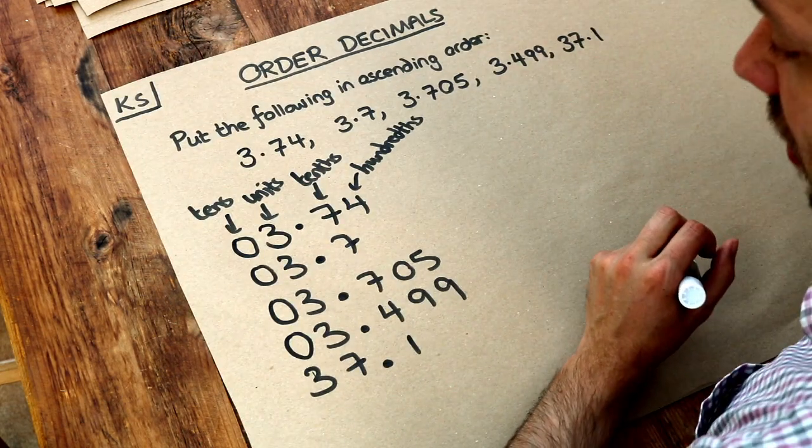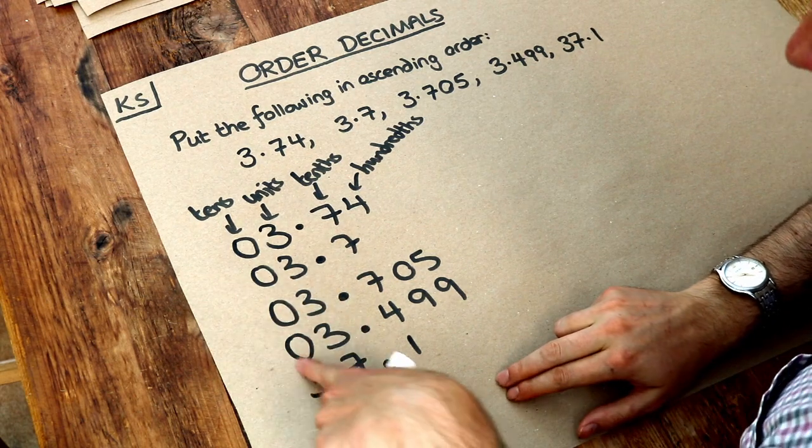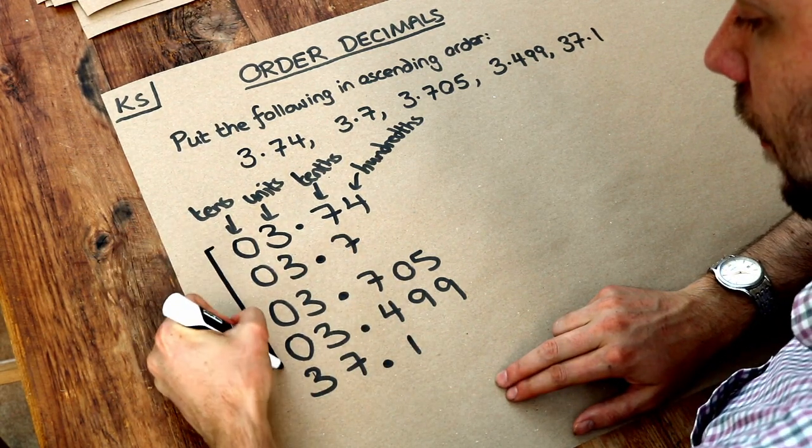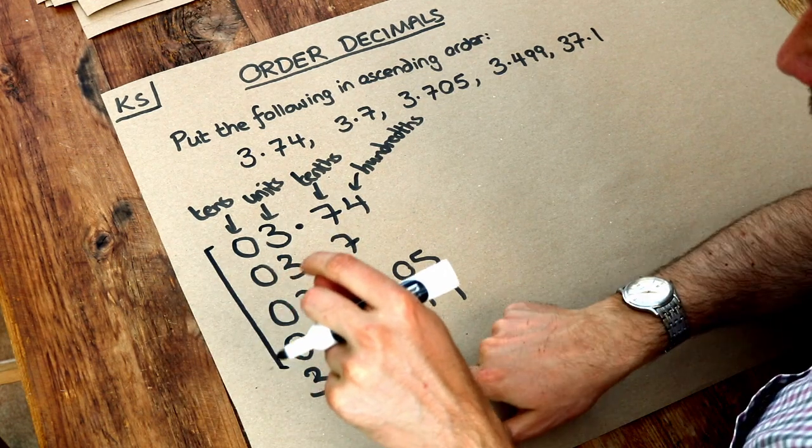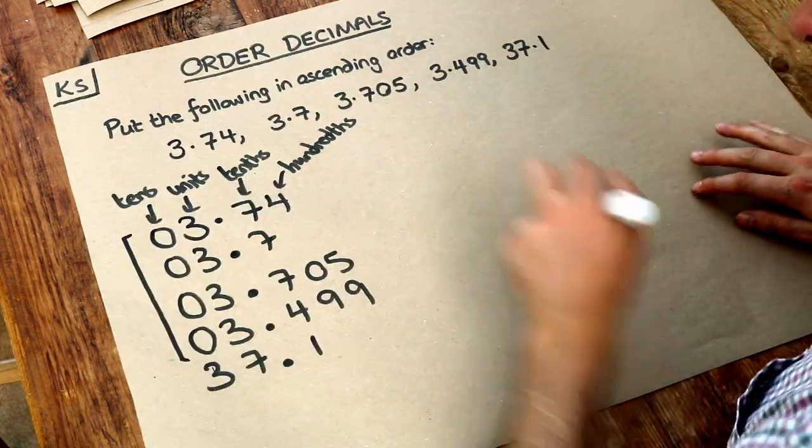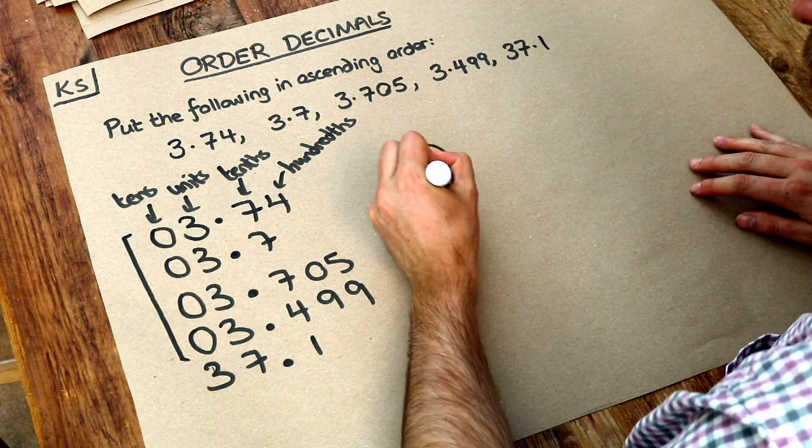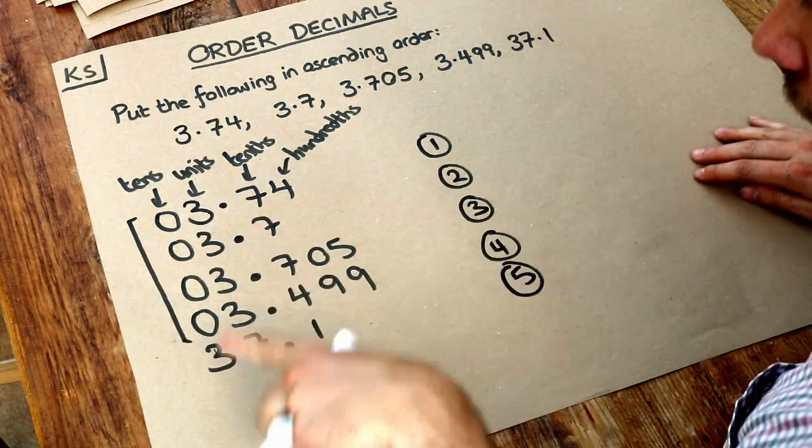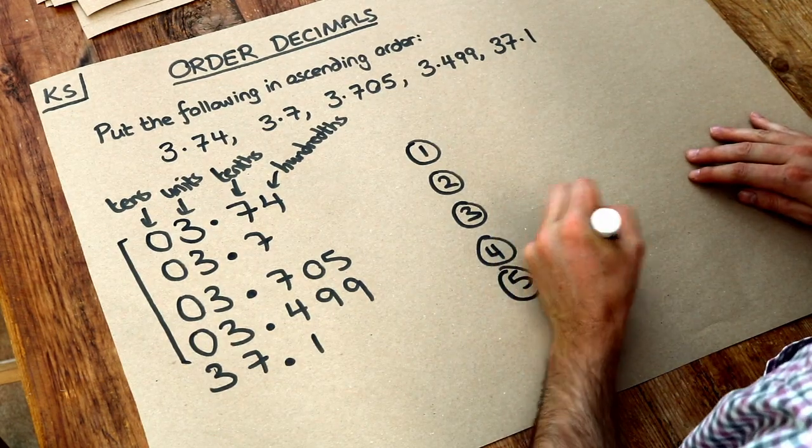So we want the smallest one, we look at the tens digit. Which of these is the smallest? Well zero is smaller than three, so it's going to be these four first and then the 37.1 is going to go last. So let's put that there first if we're putting these in order one, two, three, four, five. That's the highest tens digit so that's going to go last.